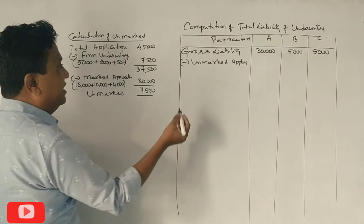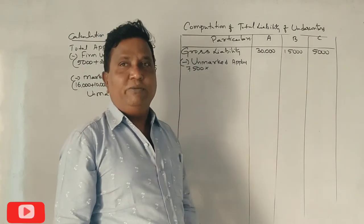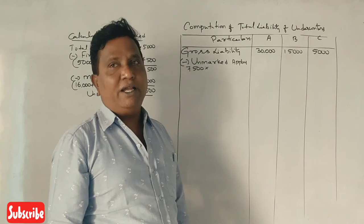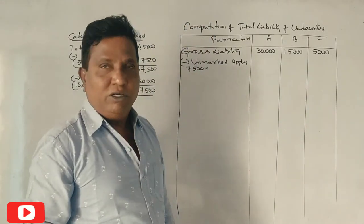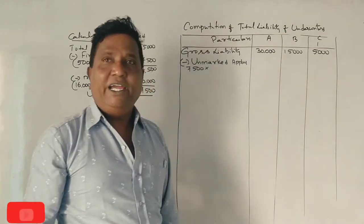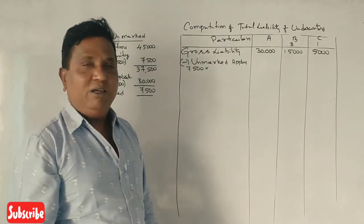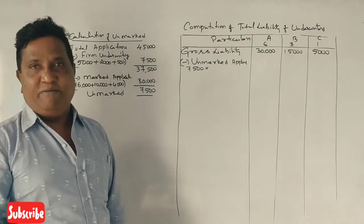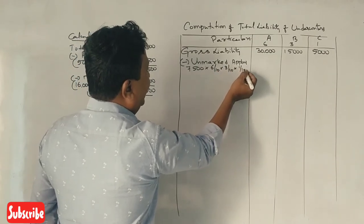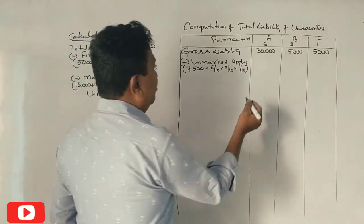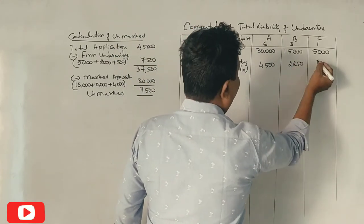This is the number of 7,500 unmarked. How do you distribute the unmarked? The ratio is 6 by 10, 3 by 10, 1 by 10. Yes, what is it? 4,500, 2,250, 750. Correct?